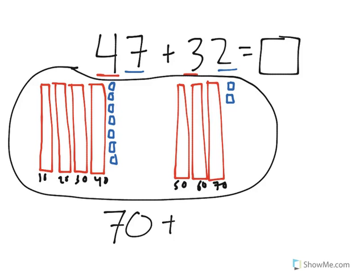But I'll write out 70 for now. And then we have to add in the ones: 1, 2, 3, 4, 5, 6, 7, 8, 9. There are 9 ones.